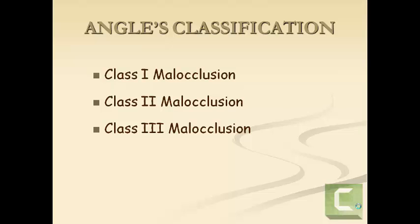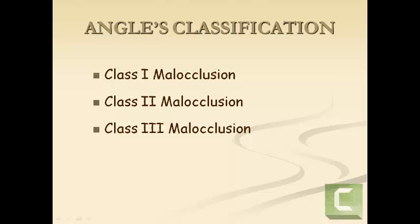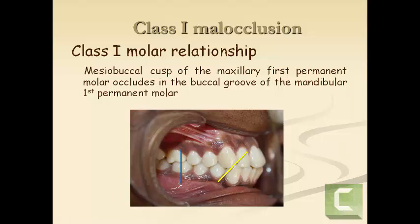Let's have a look at the various types of malocclusion. In class 1 malocclusion, you have a class 1 molar relationship. As we can see in the figure, the mesiobuccal cusp of the maxillary first permanent molar occludes in the buccal groove of the mandibular first permanent molar. You also usually have a class 1 canine relationship, where the mesiobuccal cusp tip of the upper canine falls on the distal cusp tip of the lower canine.